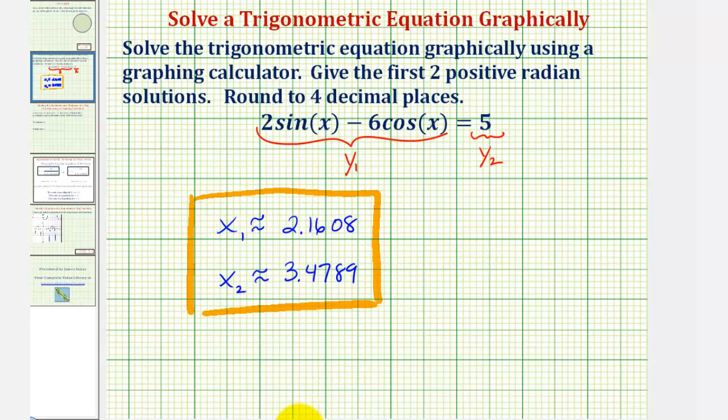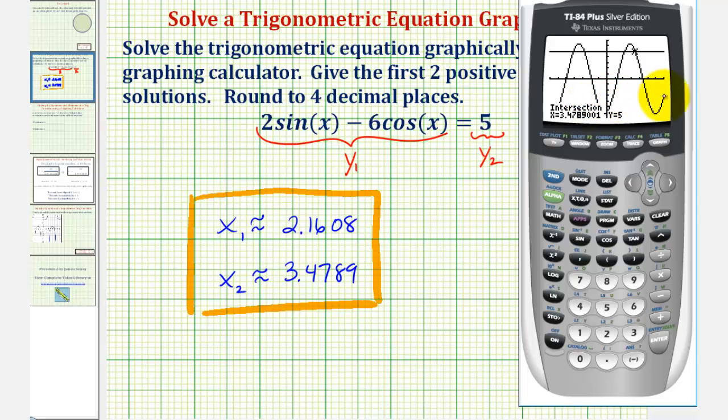Going back to the graph just for a moment, because these graphs continue to the left and right forever, notice how there would be an infinite number of solutions to this equation.